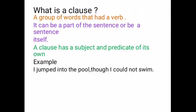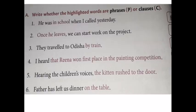A clause is a group of words that has a verb. It can be a part of a sentence or a sentence itself. A clause has a subject and a predicate of its own. For example: 'I jumped into the pool though I could not swim' — here 'I jumped into the pool' is the clause. We can see a subject, a verb, and a predicate. In your textbook, an activity is given on page number 34. You have to write whether the highlighted words are phrases or clauses. We will be doing more examples of this during our class.